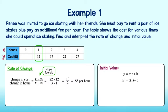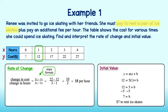Now, all we need to do is solve for b. 5 times 1 is 5. Then subtract 5 from both sides to get 7 equal to b. The initial value is 7. The problem tells us she has to pay to rent ice skates, so we can interpret this as the initial cost Renee incurs before skating. In other words, it costs $7 to rent a pair of ice skates.